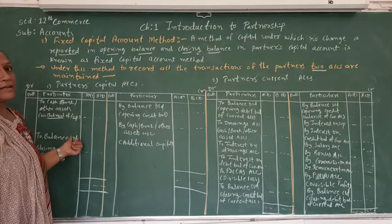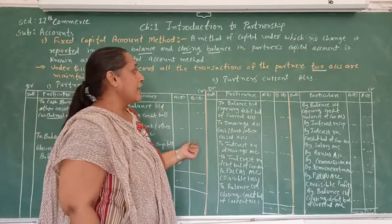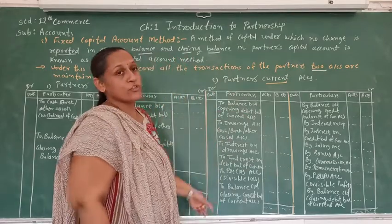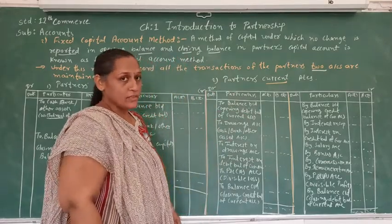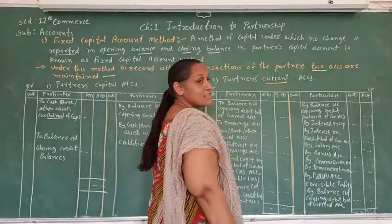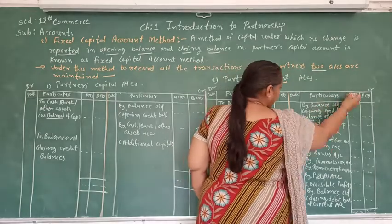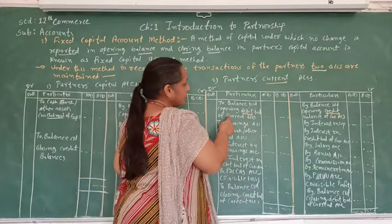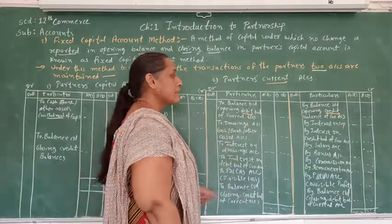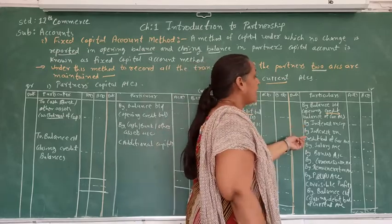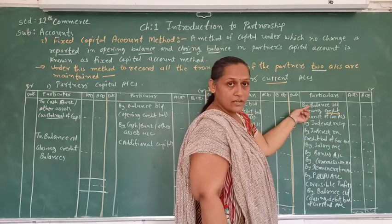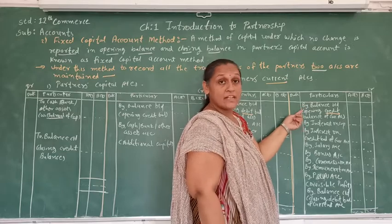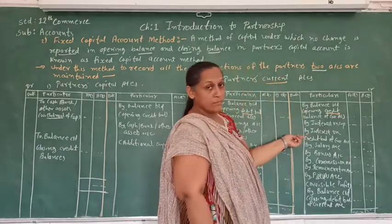The other account we prepare is the partner's current account, where we record all transactions of the partner with the firm. On the credit side, if the balance of the current account is a credit balance, it is written on the credit side; if it is a debit balance, it is written on the debit side. Interest on the credit balance of the current account — whatever interest is supposed to be paid to the partner — is written on the credit side.